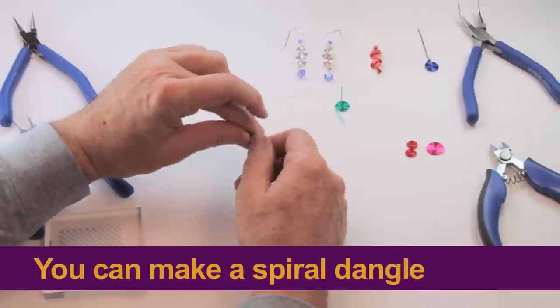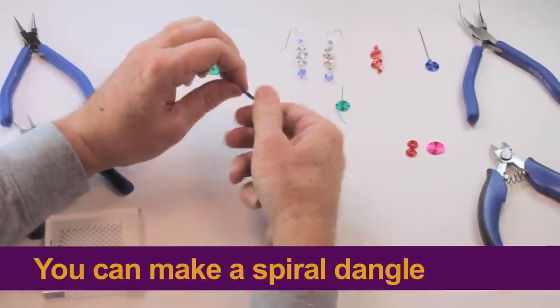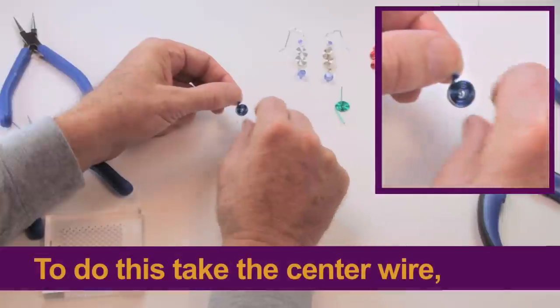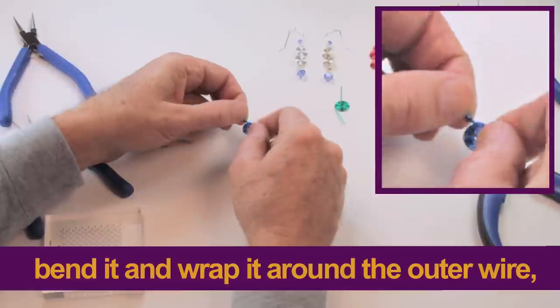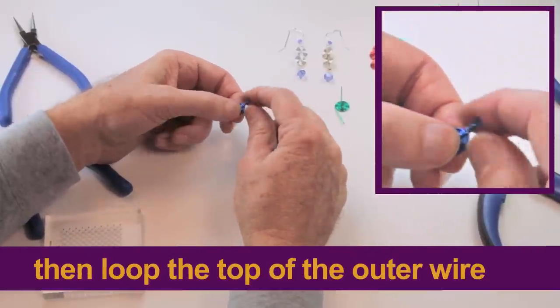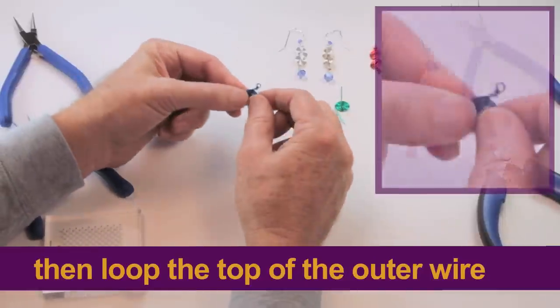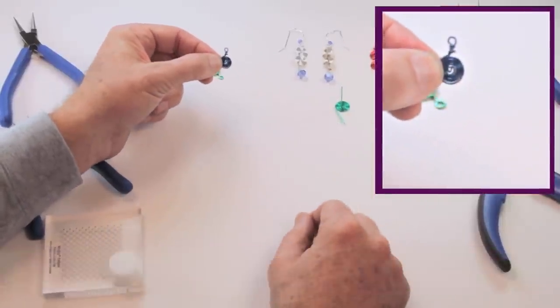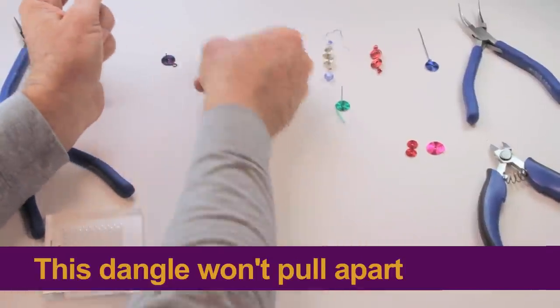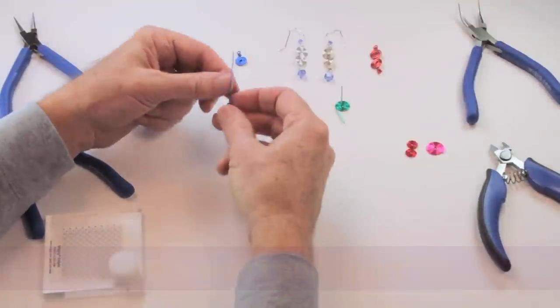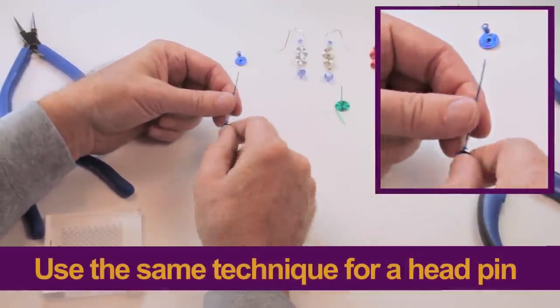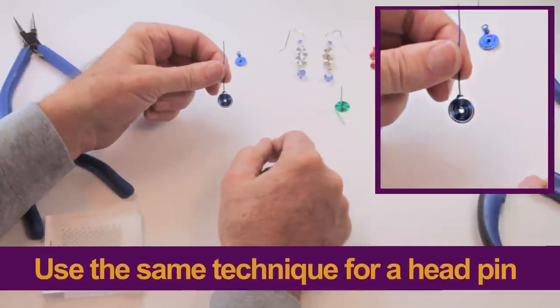You can make a spiral dangle as a permanent component. And what we do to make a spiral dangle is we make the spiral, and then we take the center wire and bend it up and wrap it around the outer wire. And then we can make a loop at the top of the outer wire, and we have a spiral dangle. And it won't pull apart. That's the reason why we do this is so the spiral will be permanent and not pull apart. Use the same technique here to make a spiral head pin. Take the center wire, wrap it around the outer wire, and we made a spiral head pin.